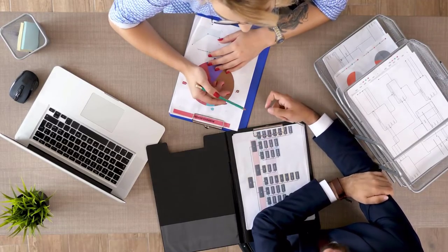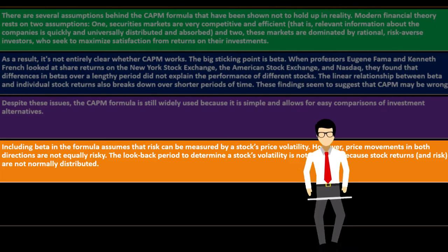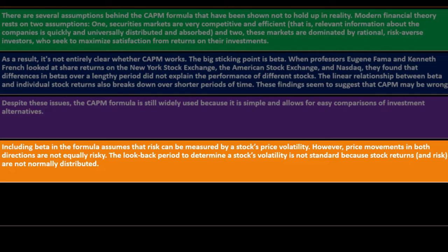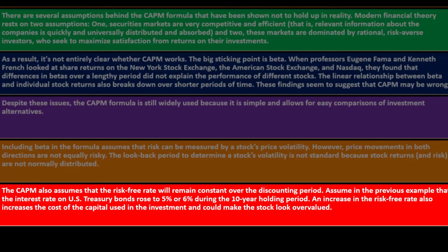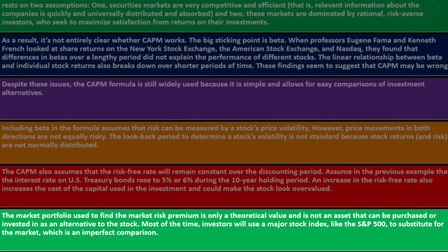Nassim Taleb gets into a lot of the statistical analysis on these assumptions — there are times when these models don't quite work. You need to know the models to know when they don't work, and try to account for that within your model, possibly building more complex models. The CAPM also assumes that the risk-free rate will remain constant over the discounting period. If the interest rate on U.S. Treasury bonds rose to 5% or 6% during a 10-year holding period, that increase in the risk-free rate also increases the cost of capital and could make the stock look overvalued.